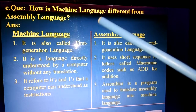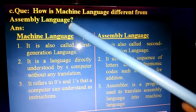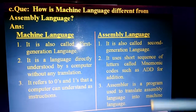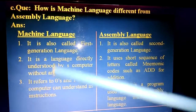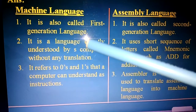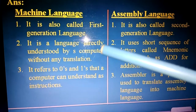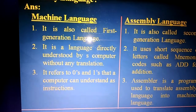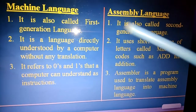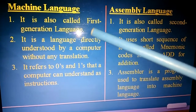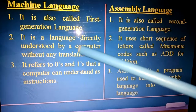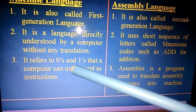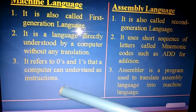Question C: how is machine language different from assembly language? For machine language: it is also called first generation language. It is a language directly understood by a computer without any translation. It refers to zeros and ones that a computer can understand as instructions.